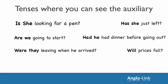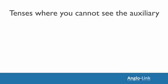Now let's look at tenses where you cannot see the auxiliary. These are the present simple and the past simple. For the present simple, the auxiliaries you need to bring in are 'do' and 'does,' and for the past simple, 'did.' Remember that 'do' is for I, you, we, and they, and 'does' for he, she, and it. 'We have a deal.' Notice that 'have' is the main verb here, so we need the auxiliary: Do we have a deal?